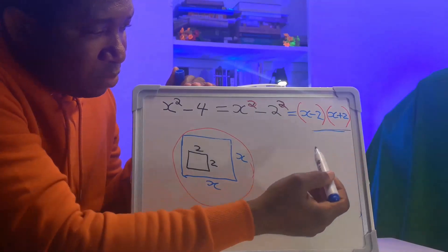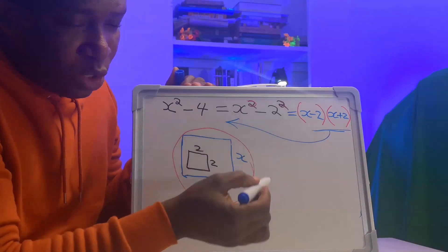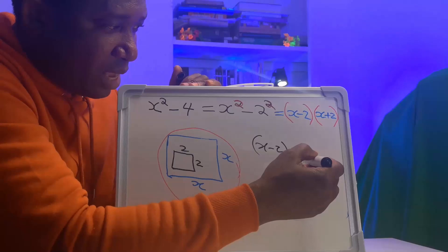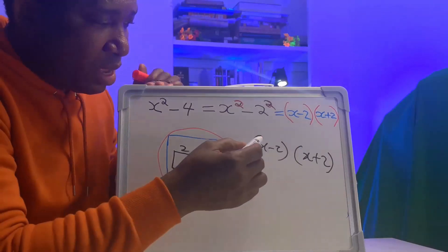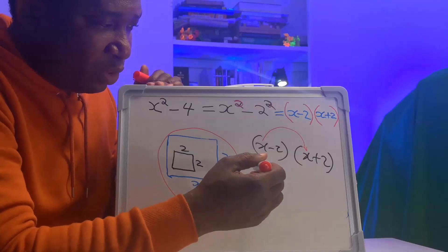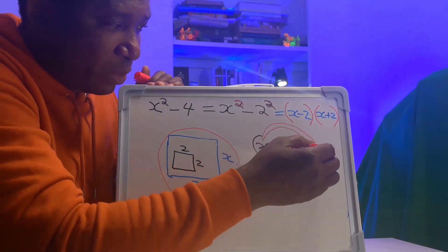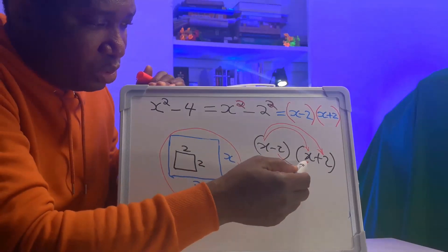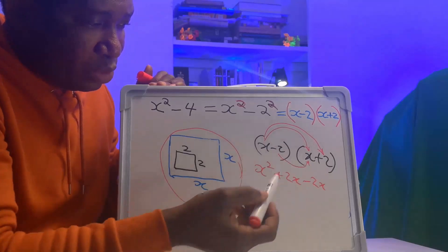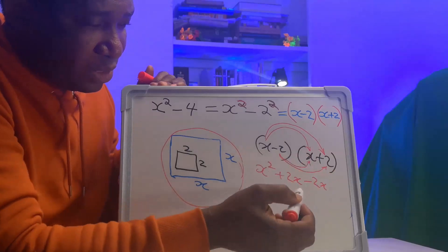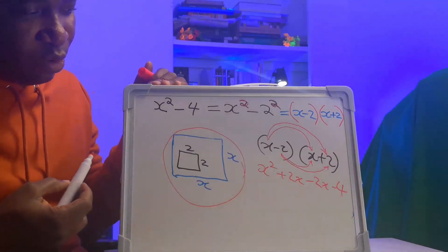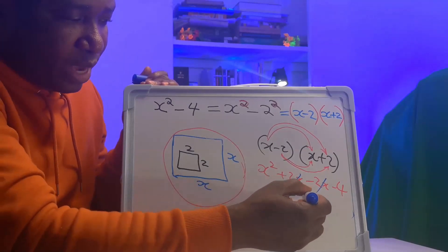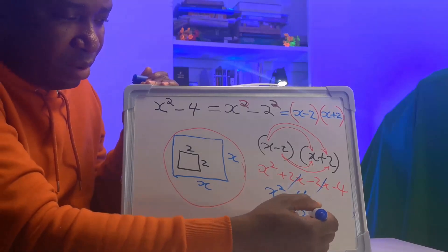If you expand this bracket, you will get back the original question. x times x gives x squared; x multiplied by 2 gives plus 2x; minus 2 times x gives minus 2x; minus 2 times plus 2 gives minus 4. The plus 2x and minus 2x cancel, and you are left with x squared minus 4, which is x squared minus 2 squared.